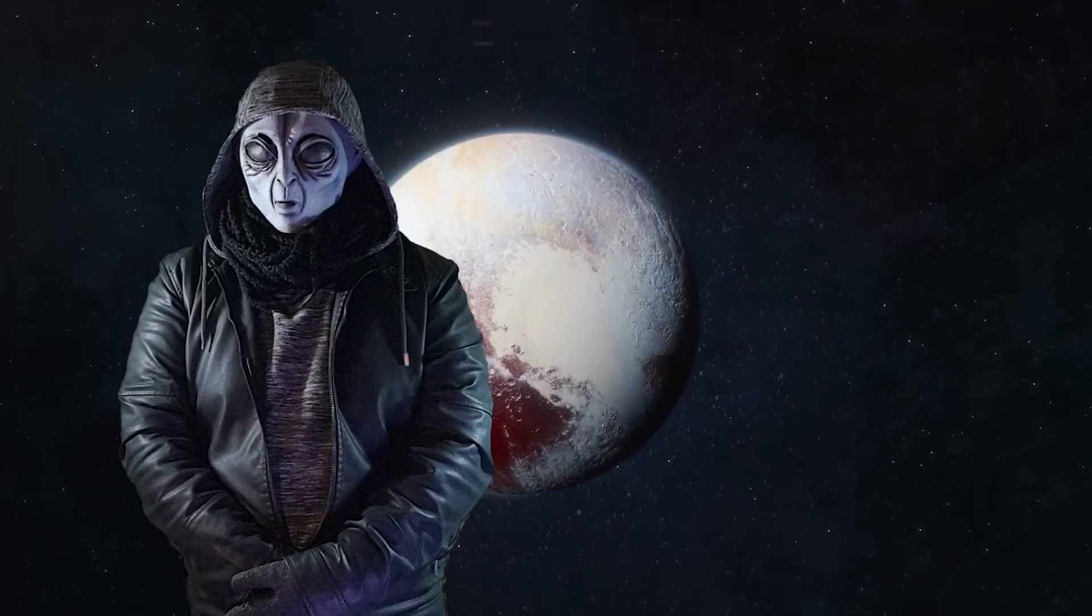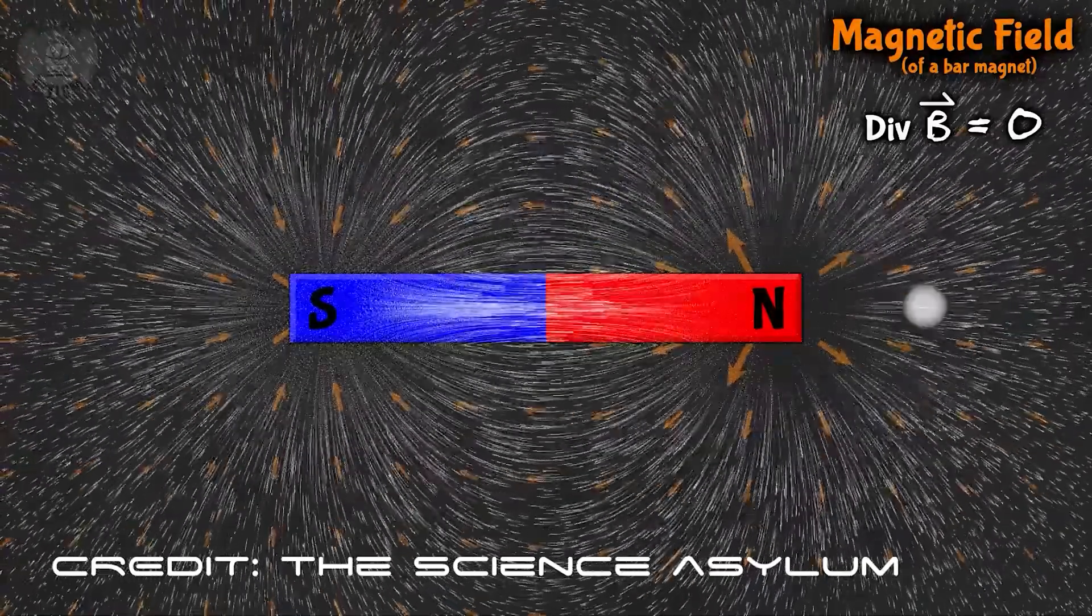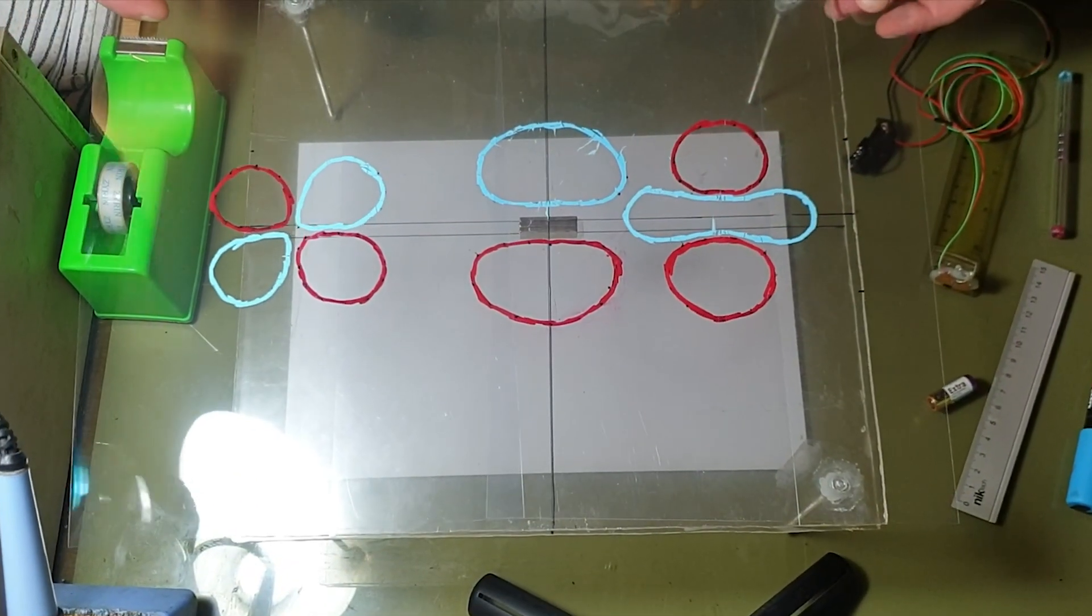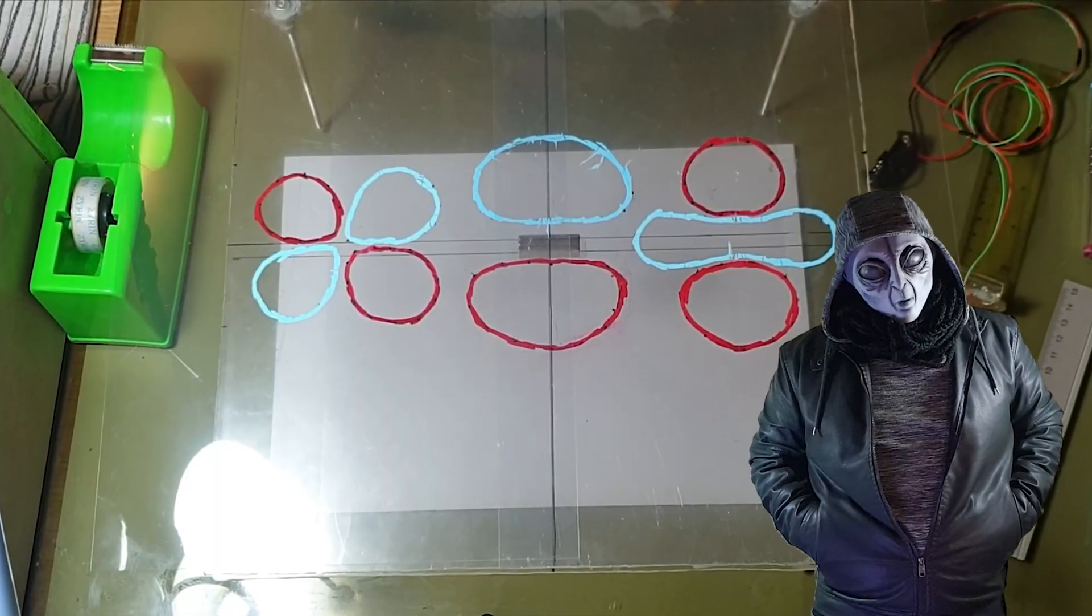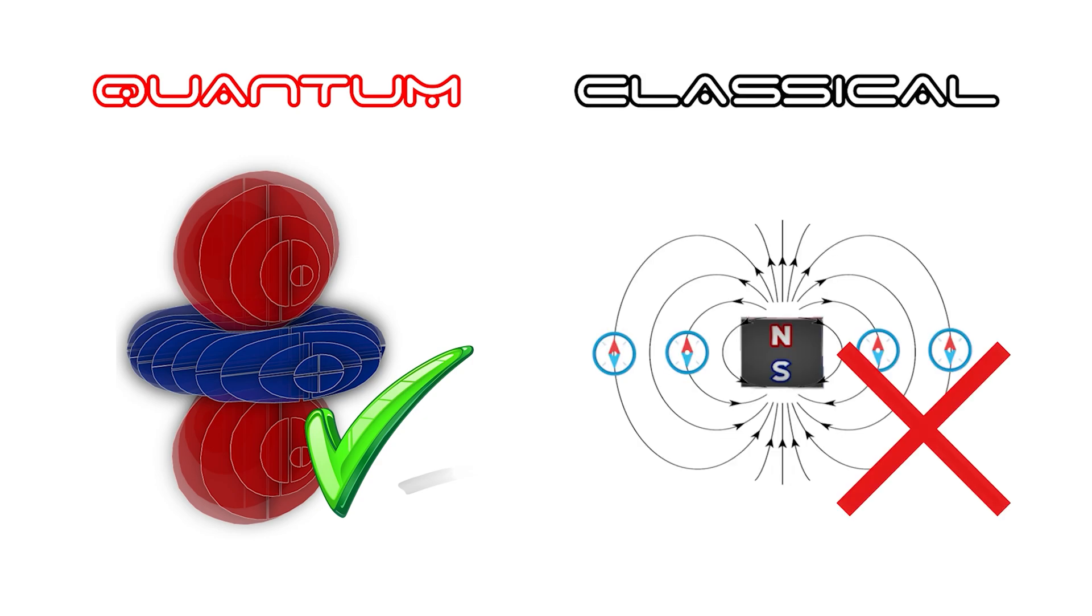The difference is clear. Classical mechanics describes fields as fluid and continuous, but it does not predict discrete, stable shapes like those observed. Quantum logic, on the other hand, explains them naturally. And this is why, after all these experiments, the quantum interpretation is more consistent than the classical view.